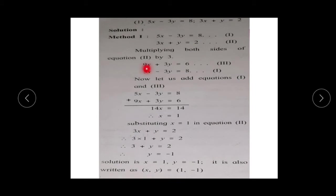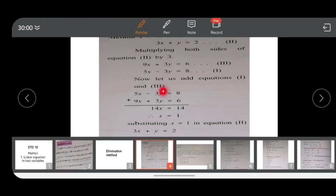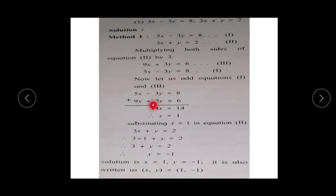Multiplying equation 2 by 3: 3x × 3 = 9x, y × 3 = 3y, and 2 × 3 = 6. Give this as equation number 3. Now write down equation 1 again: 5x - 3y = 8. Here, 3y and 3y are the same but with different signs, so add equations 1 and 3 together to cancel the y terms. Then 5x + 9x = 14x and 8 + 6 = 14, giving x = 1.